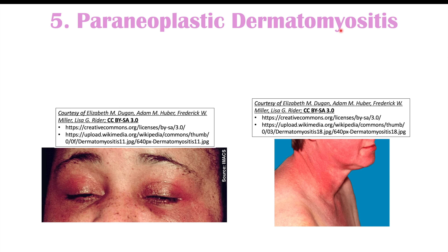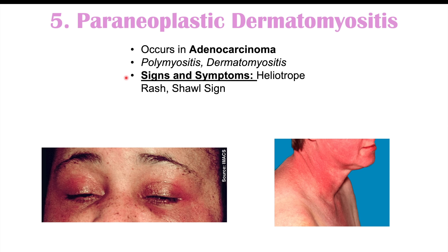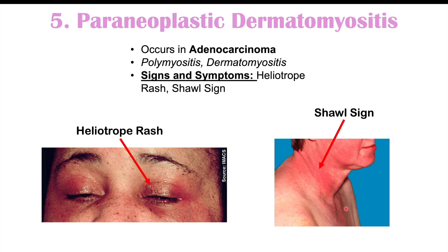Another facial finding is paraneoplastic dermatomyositis, which occurs more specifically in adenocarcinoma. Signs include a heliotrope rash — a rash around the eyes — and the shawl sign, which is a reddened rash on the neck due to sun exposure.